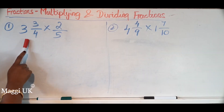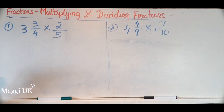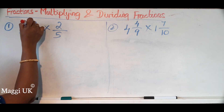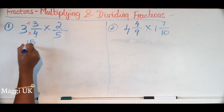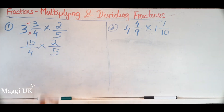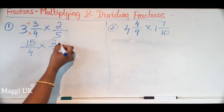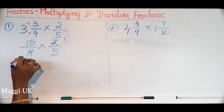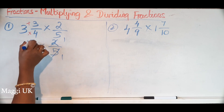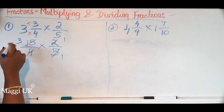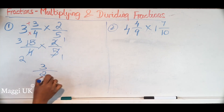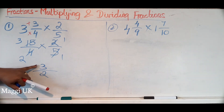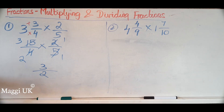Here you have a mixed number and a normal fraction. When you have a mixed number, you multiply the whole number by the denominator and add the numerator. So: 4 times 3 is 12, plus 3 is 15 — that gives 15 over 4. Then you bring the other fraction as it is. Now cross-multiply: 2 and 4 — 2 goes into 2 once, and 2 goes into 4 twice. Then 5 and 15 — 5 goes into 15 three times. So you have 3 over 2: numerator bigger than denominator, so convert to simplest form.